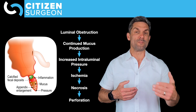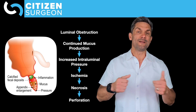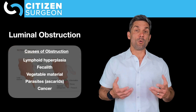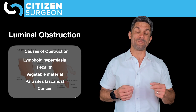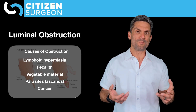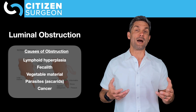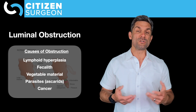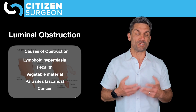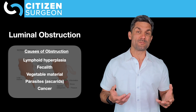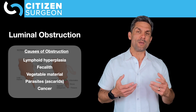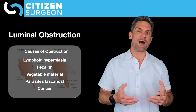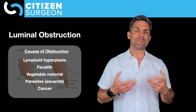The pathway is: luminal obstruction, overproduction of mucus in a constrained space, increased pressure, decreased perfusion, ischemia, and then cell death. What can cause that obstruction? Number one is a fecalith — a calcified piece of stool. You can also have vegetable matter, worms in some parts of the world, or in rare conditions a cancer like a carcinoid or mucinous adenocarcinoma. Without a physical plug, lymphoid hyperplasia can also cause luminal obstruction and set off this cascade leading to appendicitis.